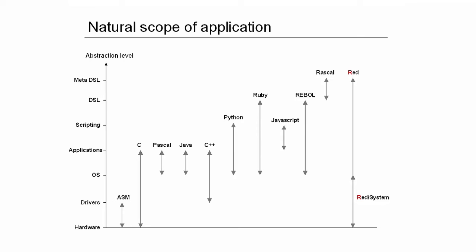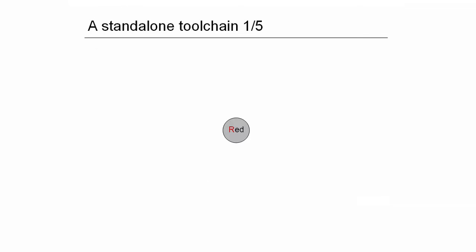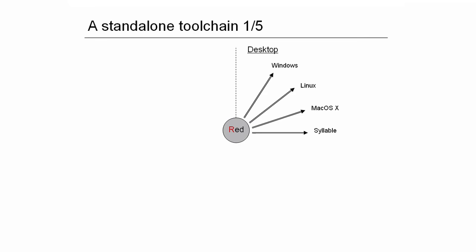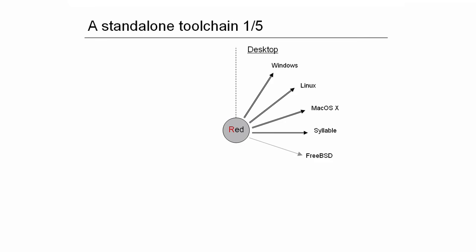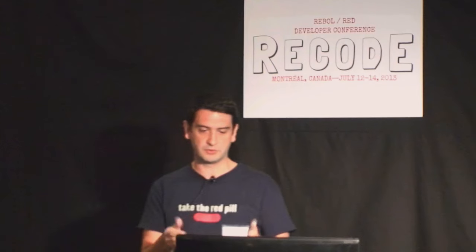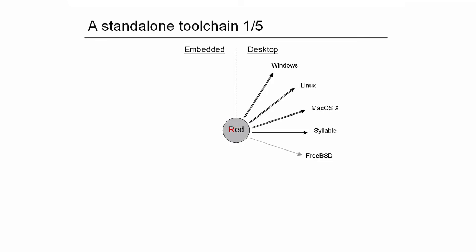Let's look at the platforms we support. On the desktop we support the classic three main players. We also support some additional operating systems like Syllable. We would like to support FreeBSD but we had some low-level issues and no FreeBSD expert among us to solve them, so it's a bit stalled — but we could probably get RED ported on FreeBSD rapidly. We also want to address the embedded market, starting with Android, which we already support. Next will be iOS, and we already run on Raspberry Pi, which is becoming quite popular.